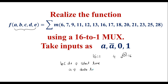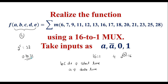A is the data line. So considering the five variables a, b, c, d, e — the possible inputs: we have 5 inputs, so 2 to the power 5 is 32. So 0 to 31 are the possible input combinations.